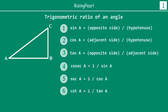Very briefly, the trigonometric ratio of an angle — we learned this in our earlier webisodes — is that if you have a right triangle ABC, trigonometric ratios are always about an angle. So if I think about angle A, there are six trigonometric ratios. Sine A equals opposite side divided by the hypotenuse. Cos A equals adjacent side divided by the hypotenuse. Tan A equals opposite side divided by adjacent side. Cosec A equals 1 divided by sin A — cosec A is the reciprocal of sin A. Sec A is the reciprocal of cos A, so sec A equals 1 divided by cos A. Cot A equals 1 divided by tan A — cot A is the reciprocal of tan A. I just wanted to highlight them for you for your quick reference.